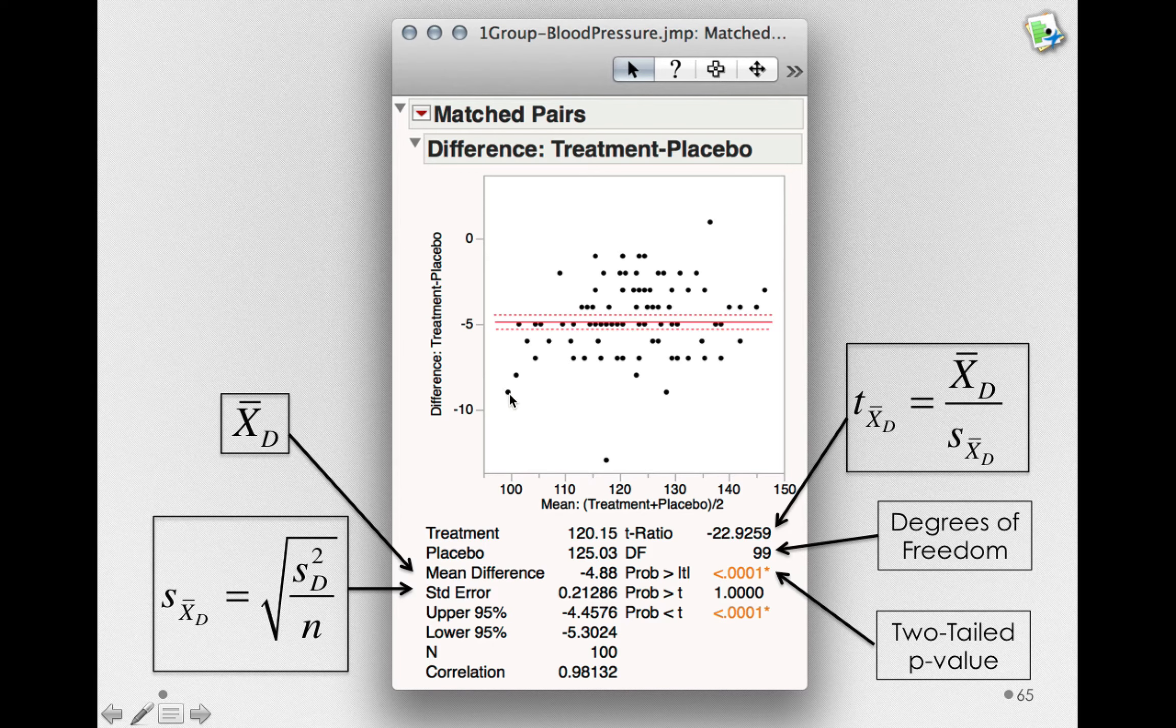So this individual here had a low blood pressure on treatment and placebo. That is, on average, they were pretty low on both. This individual also experienced a pretty large difference between placebo and treatment. What this graphic is useful for looking at is whether people who started off higher experienced more or less effective treatment.